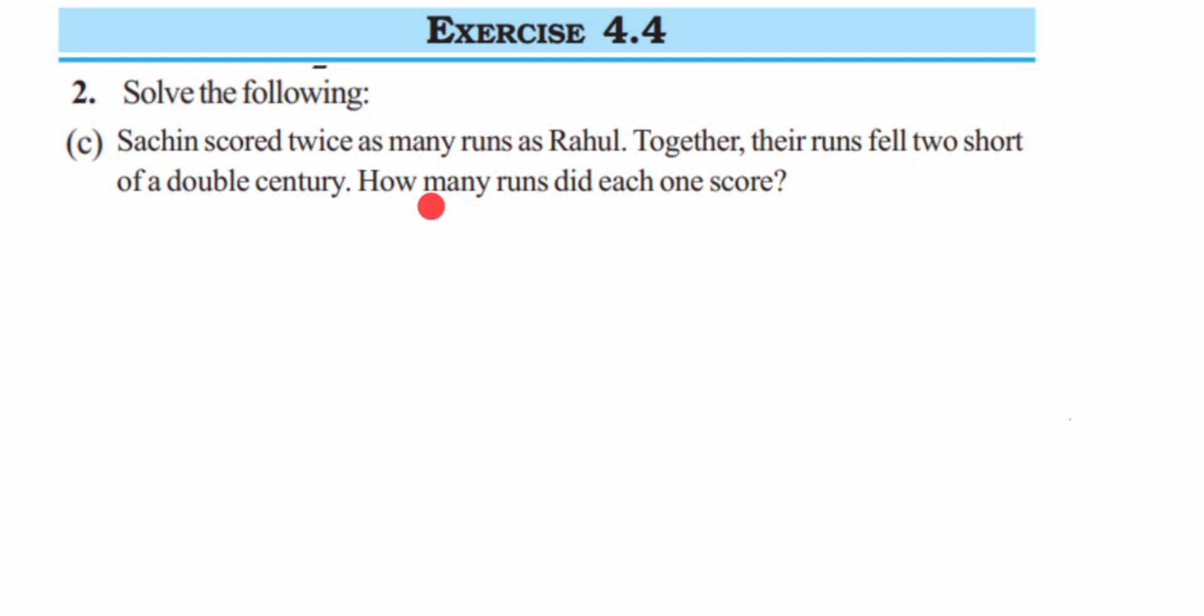How many runs did each one score? They have given the relationship between how much Sachin has scored and Rahul has scored, and they also given that together—meaning the sum of Rahul's score and Sachin's score—is two short, two less than the double century. We have to find out each of the scores. Since we're comparing Sachin's score with Rahul's, we're going to assume that Rahul's score is X or any variable.